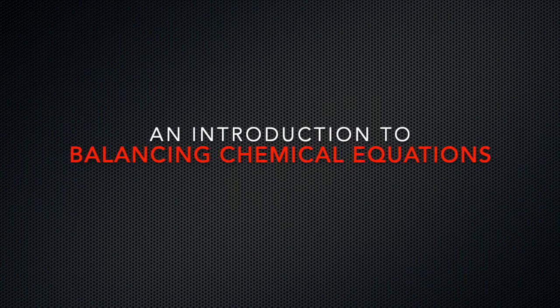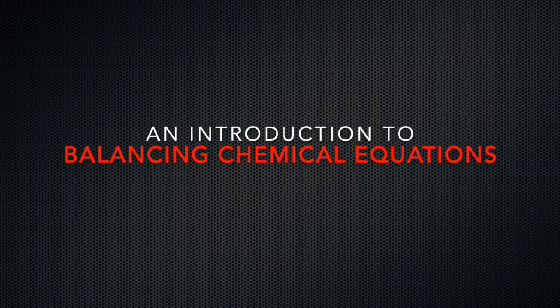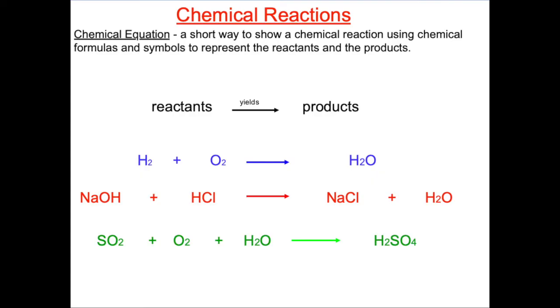In this video, we'll learn how to balance chemical equations. The first thing we want to be able to do is write a chemical equation, which is a short way to show a chemical reaction using chemical formulas and symbols to represent the reactants and products.